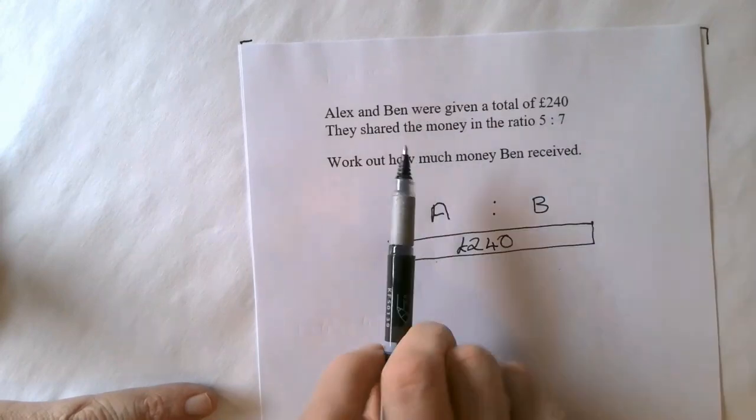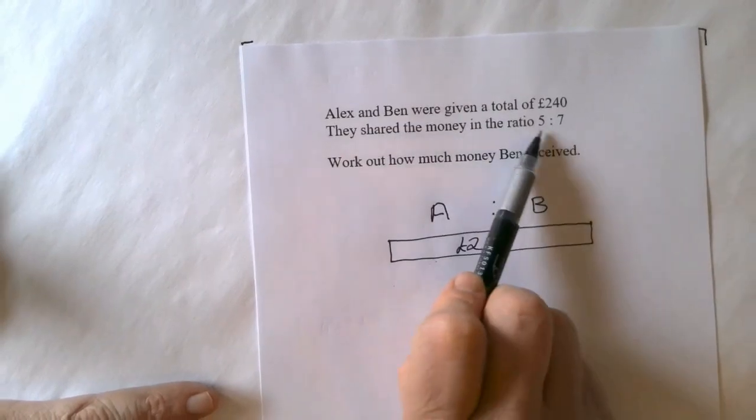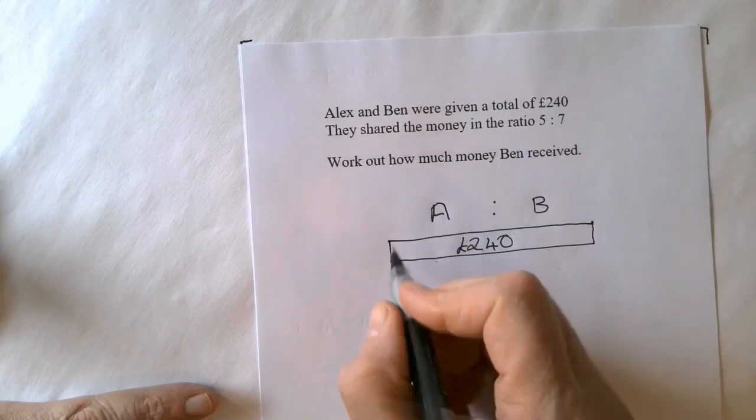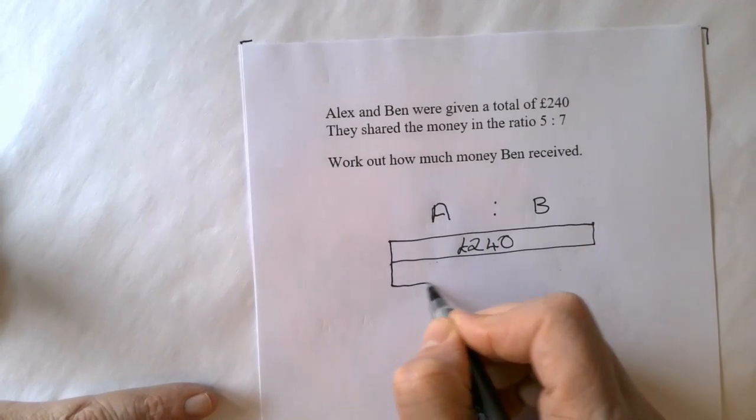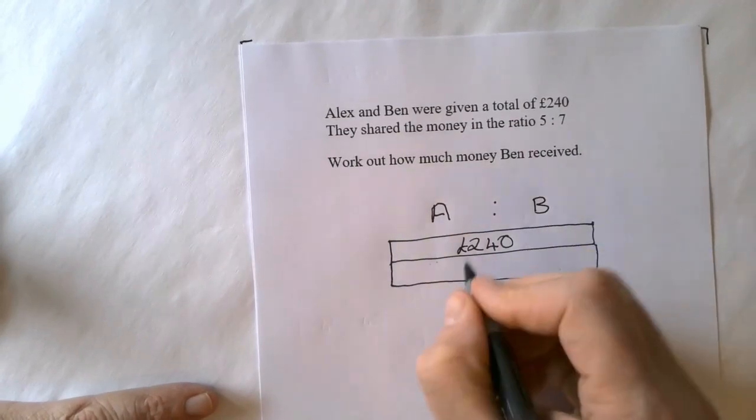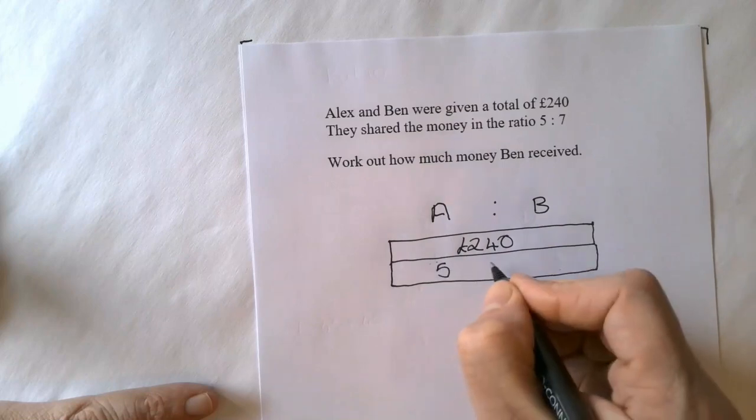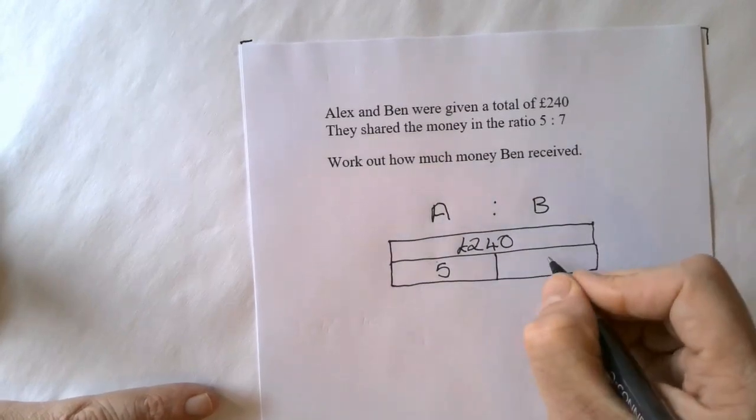And the way the ratio says is that Alex will get 5 parts and Ben will get 7 parts. So an easy way to represent that is if you draw underneath and put your 5 parts for Alex and your 7 parts for Ben.